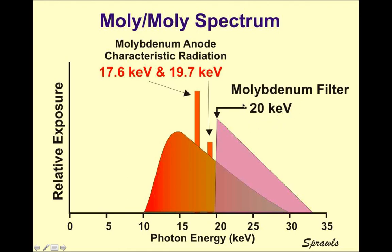Any photon at 20 keV or higher is very likely to cause ejection of that K shell electron. When it reacts with the filter, that's exactly what happens — it's being filtered because it's reacting with it. So energy above 20 keV never makes it to the patient because it reacts with the molybdenum filter.